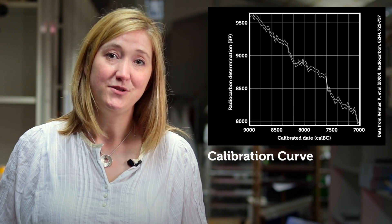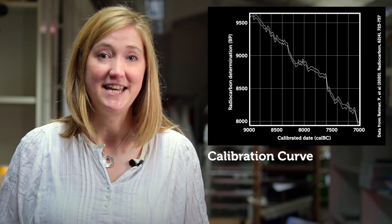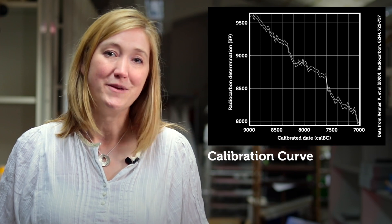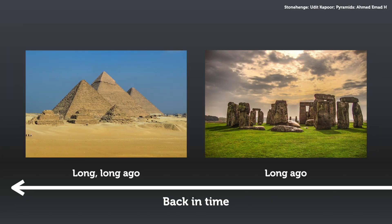I use a specialist computer program to help calibrate my dates, which I can then publish in calendar years, either BCE (before Common Era) or AD. When radiocarbon dating was first invented in the 1950s, it had a huge impact on our understanding of prehistory — it pushed some events back in time by thousands of years. For example, it showed that Stonehenge was not built after the ancient Egyptian pyramids, as was thought at the time, but was actually built first. Today, new dates tend not to be so different in time, but they are still essential to understanding what happened in prehistory.